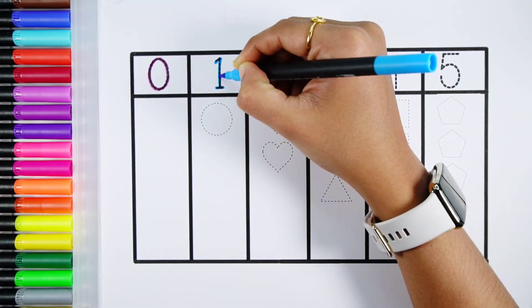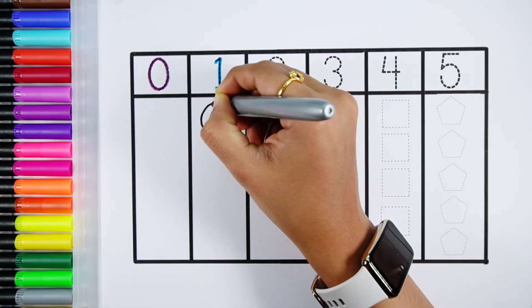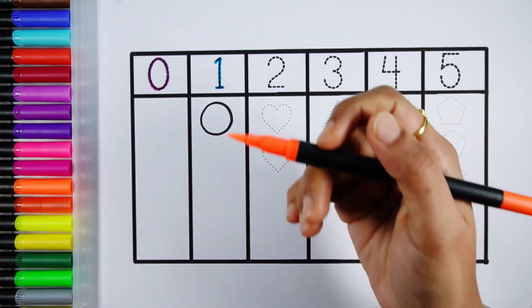Number one. One circle. Fluorescent orange color.